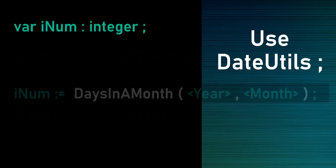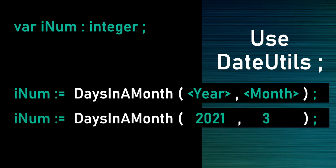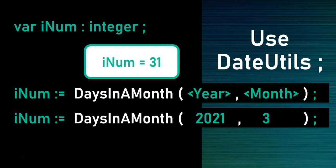Another function from DateUtils is DaysInAMonth. It takes two parameters: a year value as an integer and a month value as an integer, and it tells you how many days are in that month. For example, January returns 31, April returns 30. The reason you need to supply the year is because if you ask for February, it needs to know whether it's 28 or 29 days — i.e., whether it's a leap year. So for March 2021, it would return 31.